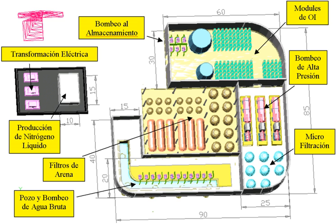Electrodialysis utilizes electric potential to move the salts through pairs of charged membranes, which trap salt in alternating channels. Membrane distillation uses a temperature difference across a membrane to evaporate vapor from a salty brine solution and condense pure condensate on the colder side. CETO is a wave power technology that desalinates seawater using submerged buoys. Wave-powered desalination plants began operating on Garden Island in Western Australia in 2013 and in Perth in 2015.